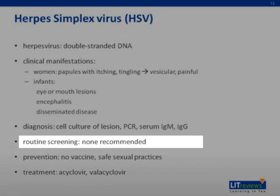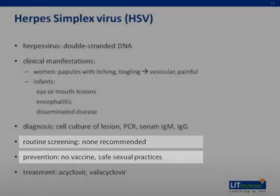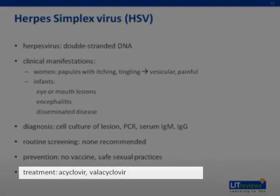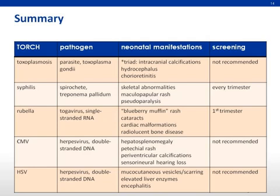In part due to the prevalence of HSV, routine screening is not recommended. There is no vaccine, and prevention is centered around safe sexual practices including barrier contraception. HSV can be treated and/or suppressed with acyclovir or valacyclovir. This summary table shows a comparison between each of the TORCH pathogens, their characteristic neonatal manifestations, and screening recommendations.